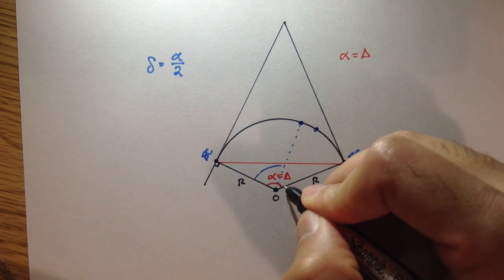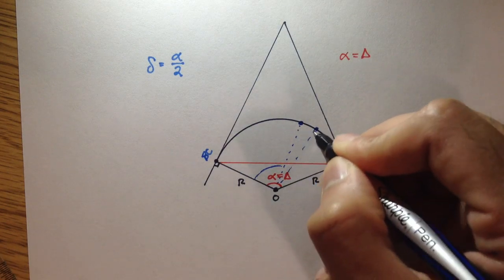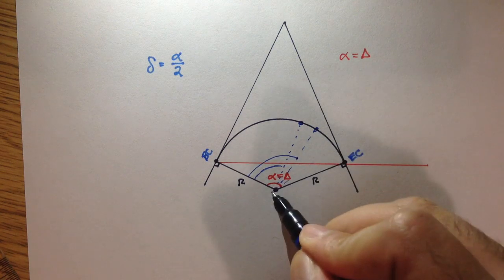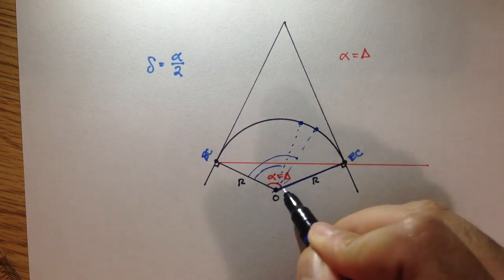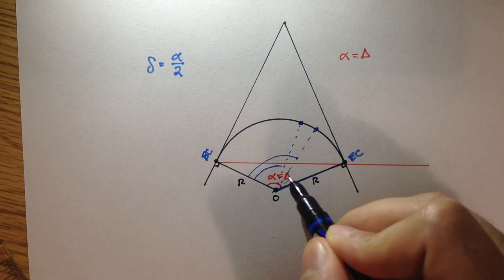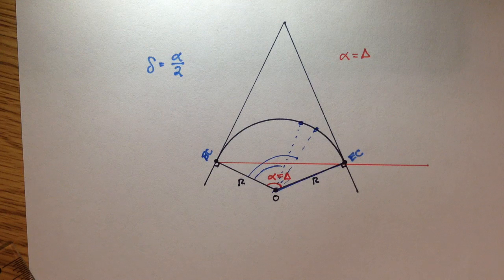And you'd keep going, and delta would keep increasing until eventually this blue dotted line becomes this line right here. And in that instance, alpha is equal to your interior angle, big delta.